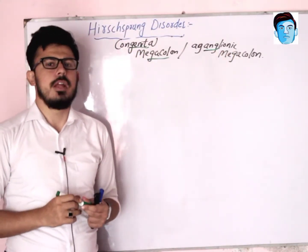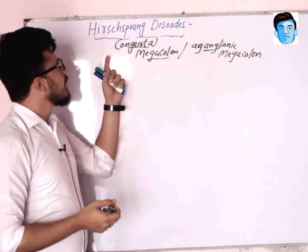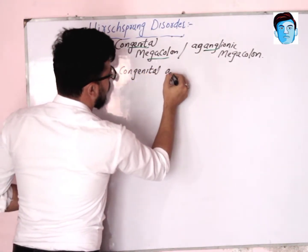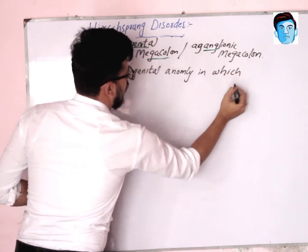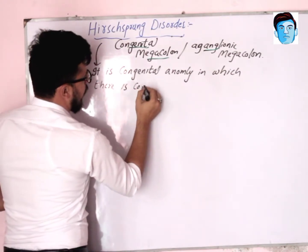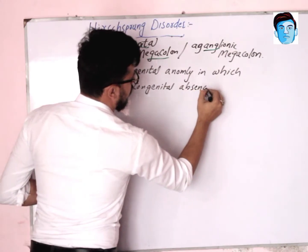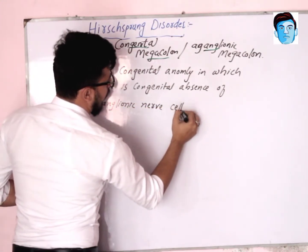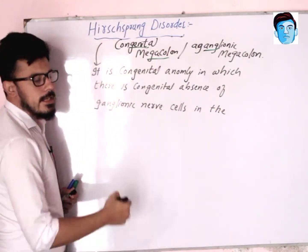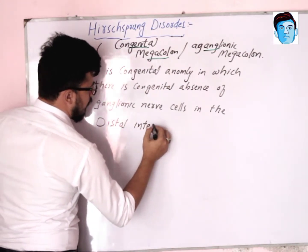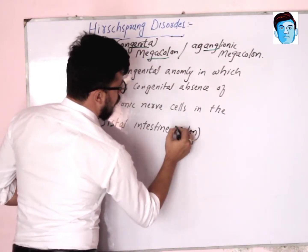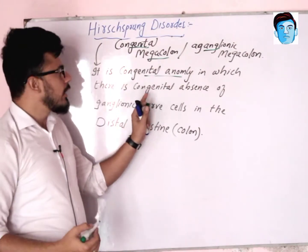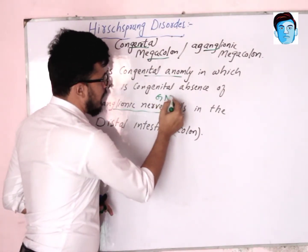We can define Hirschsprung disease as a congenital anomaly in which there is congenital absence of ganglionic nerve cells in the distal intestine, mainly in the colon.